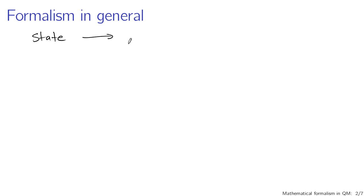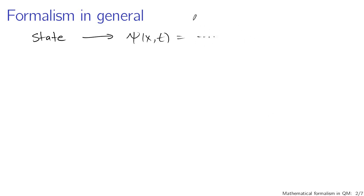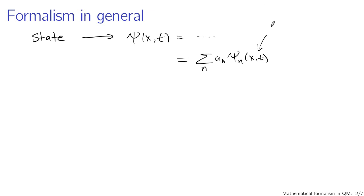We've been working with states in a couple of different ways. The first way was the notion of a wave function, psi of x and t. You can write down closed-form mathematical expressions for psi — maybe it's a Gaussian, a sinusoid, or a complex exponential. We also thought about representing the state as a superposition: a sum over n of some coefficient a sub n multiplied by psi sub n of x and t, where these psi sub n's come from solutions to the time-independent Schrödinger equation — a particle in a box or the quantum harmonic oscillator — giving sets of wave functions you can superpose to represent an arbitrary quantum mechanical state.